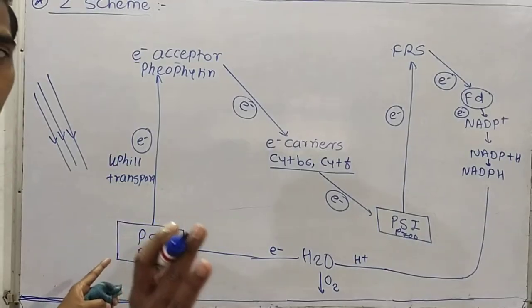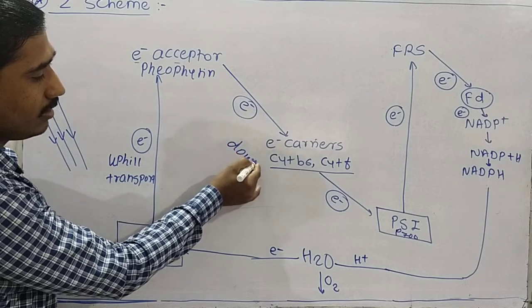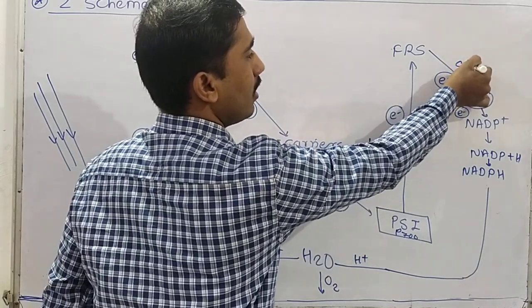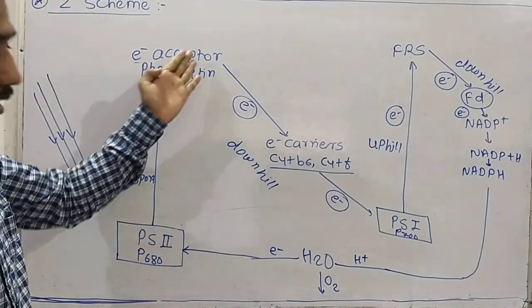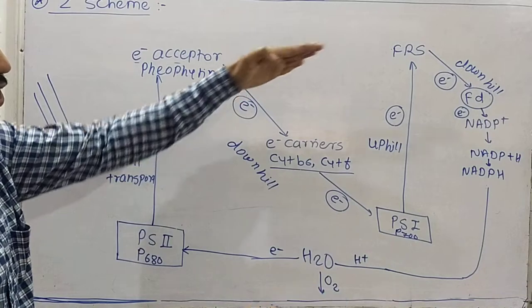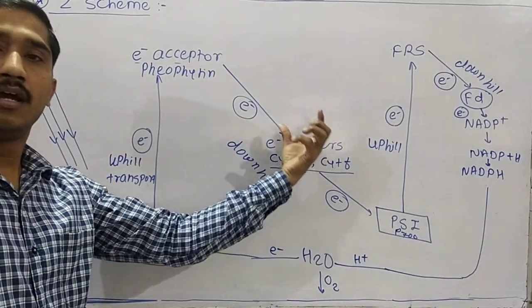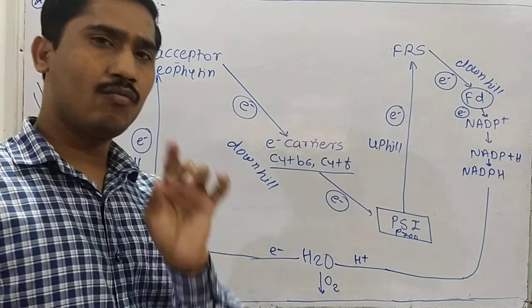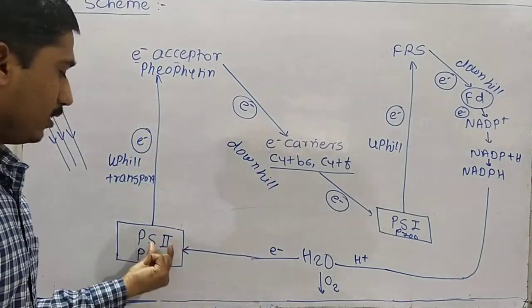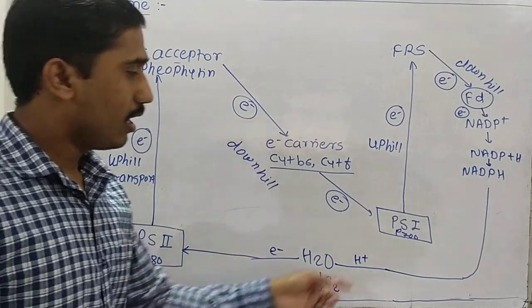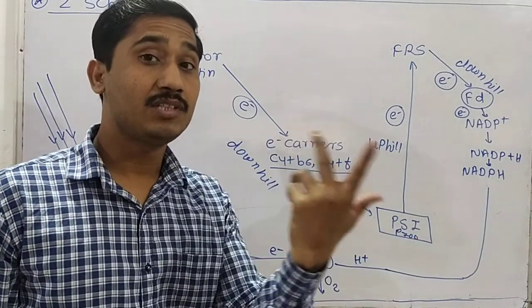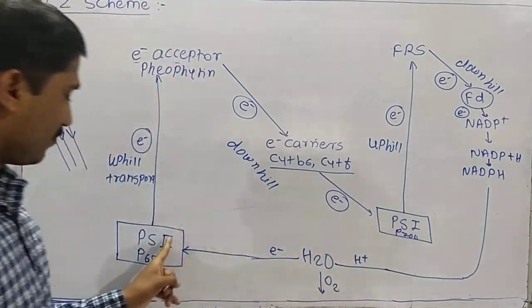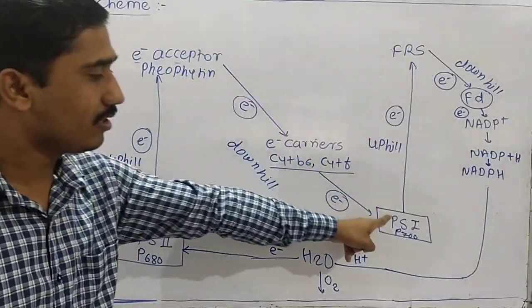The flow of electrons is: uphill, then downhill, then uphill again, then downhill — giving a characteristic Z shape. That is why this concept is called the Z scheme. For exam purposes: the last electron of PS II is replaced by water, and the last electron of PS I is replaced by PS II, because the electron from PS II finally enters PS I.